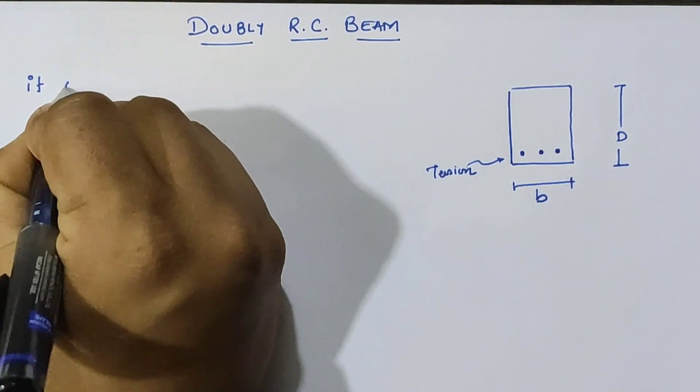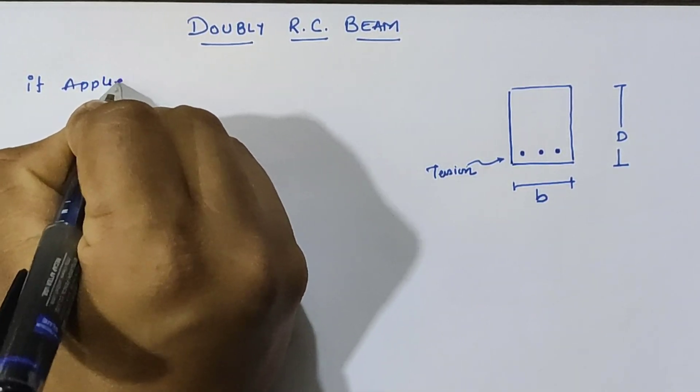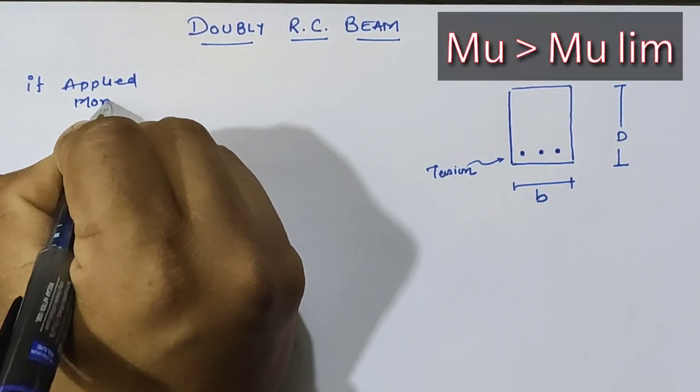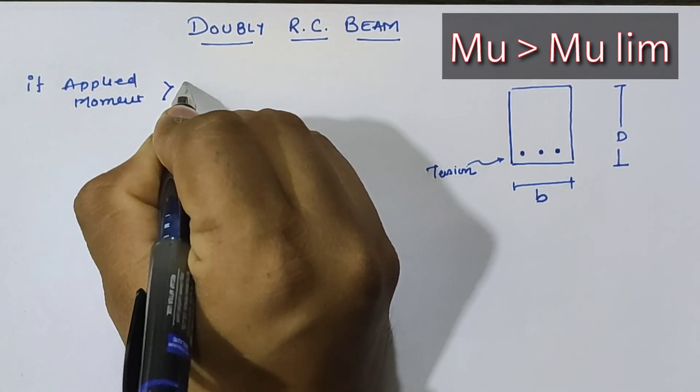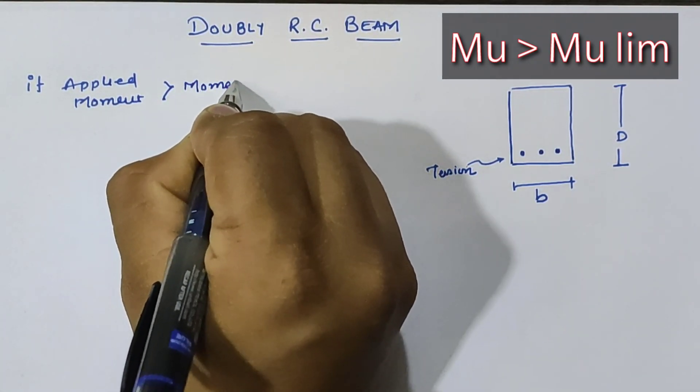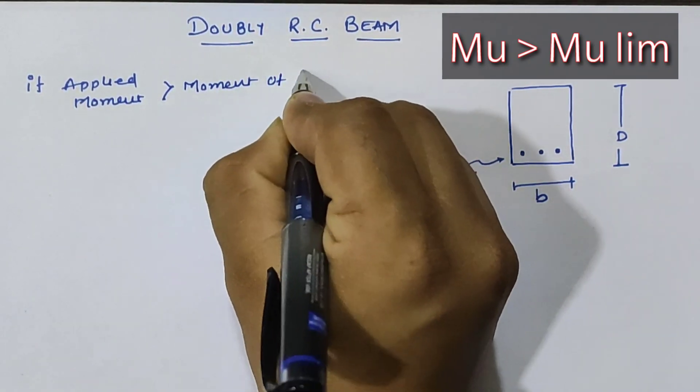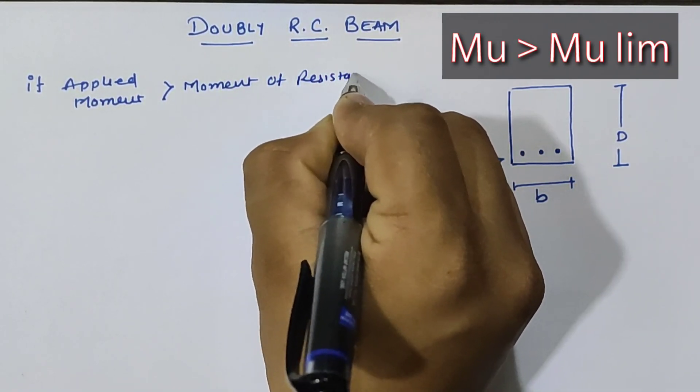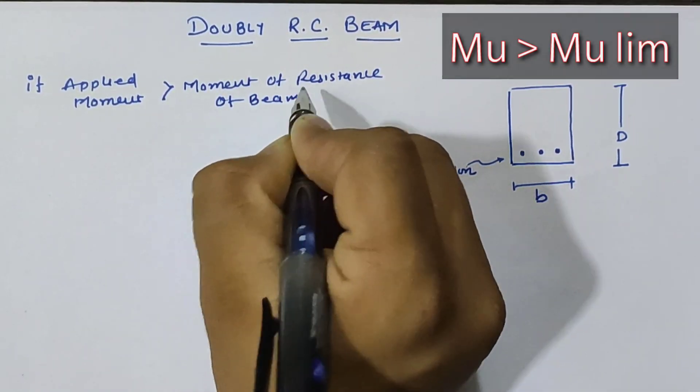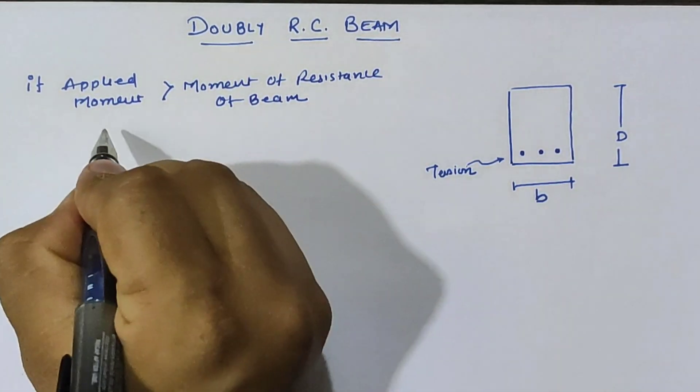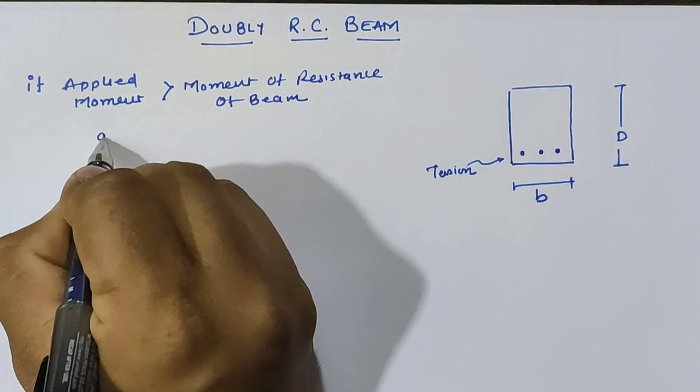In a singly reinforced beam, the applied moment can be carried by the limiting moment. But if the applied moment on the beam is greater than the moment of resistance of the given beam, then the designer has three different options.